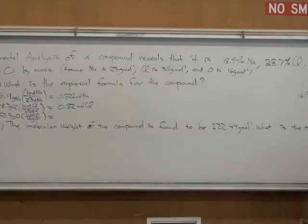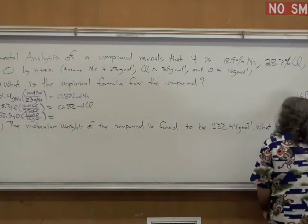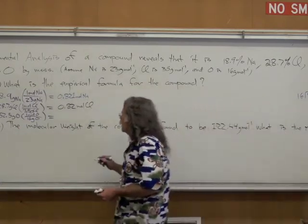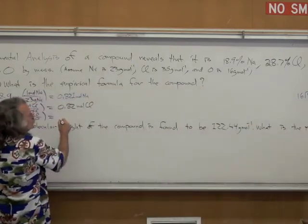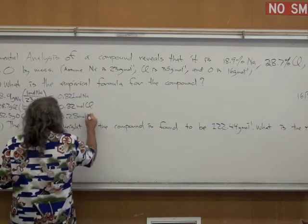So this is going to be, 16 goes into 130 about how many times? 8. So 8 times 6. 1, 2, 8. So this will be, this should be adequate. That turns out to be 3.28 moles of oxygen.